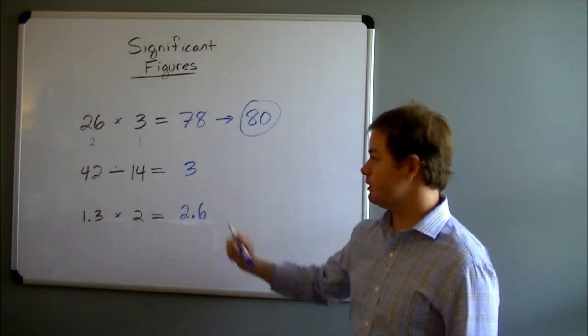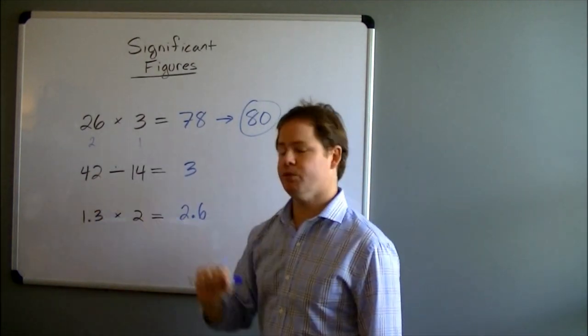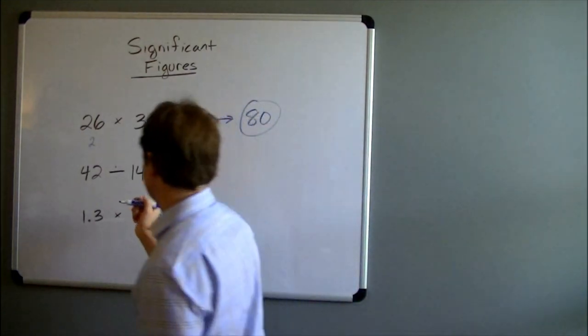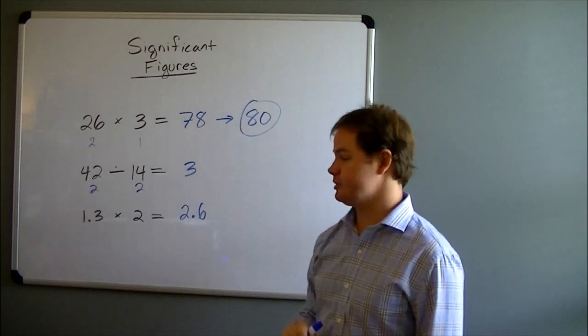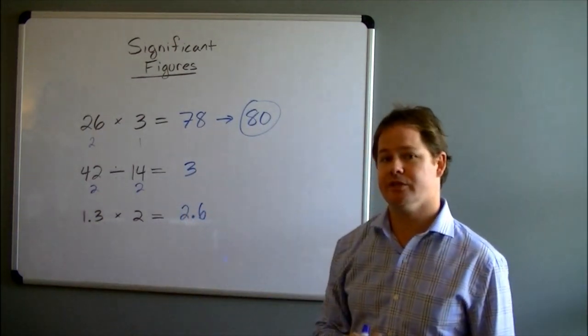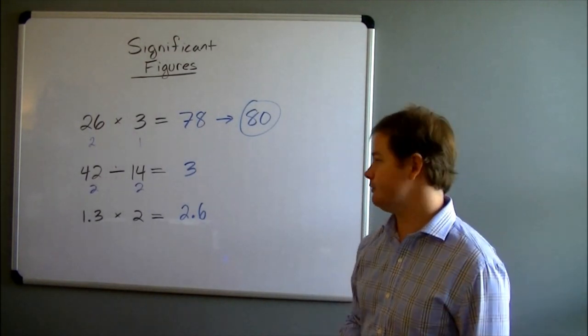Let's go ahead and go through our last two examples and make sure that we're comfortable with that process. So for 42, how many sig figs do we have there? If you said 2, you're correct. And for 14, we see 2 non-zero digits there, so that also has 2 significant figures. So since each of these numbers has 2 significant figures, our final answer should have 2 significant figures.